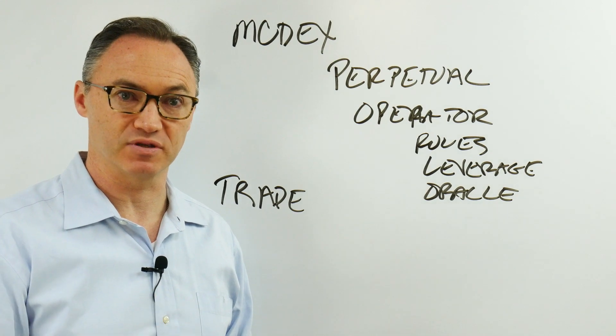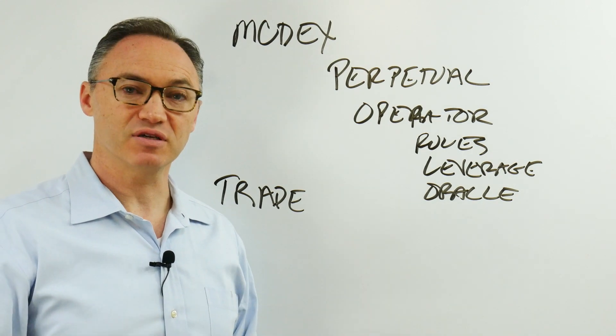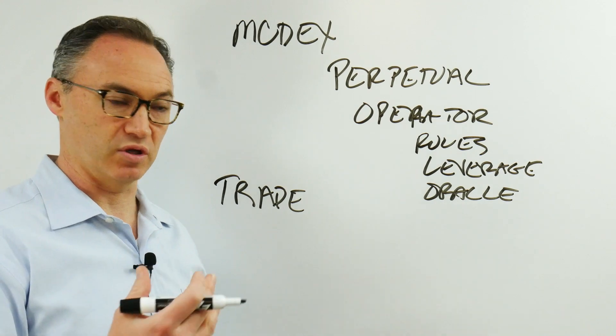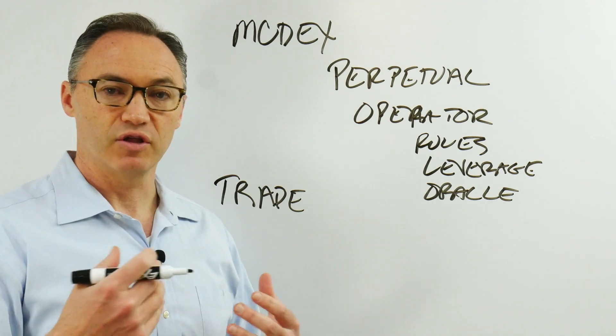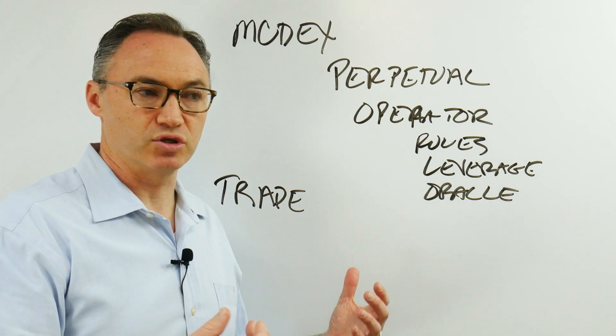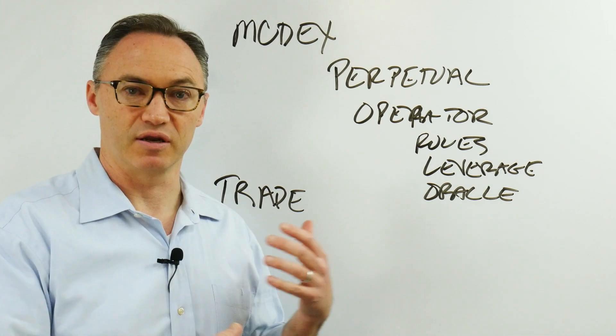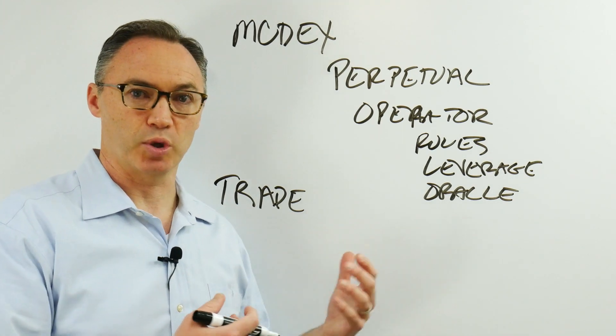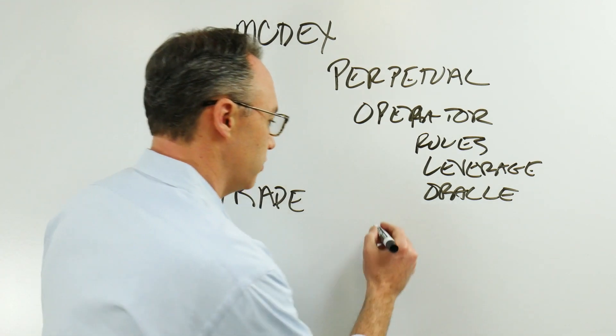Sometimes it's for trading purposes just to make more money, but sometimes it's also for hedging purposes. The traders, if they're trading in most centralized exchanges, there's a maker and a taker, a bid and an ask. In this case, the trader is always the taker because the maker